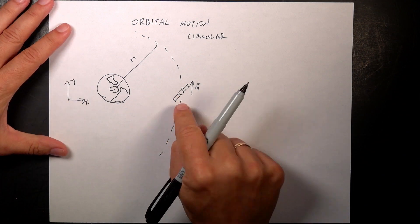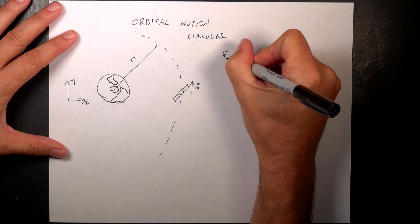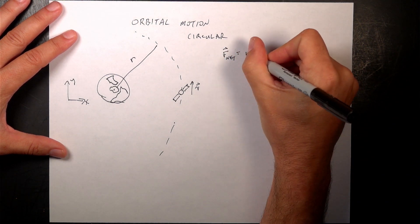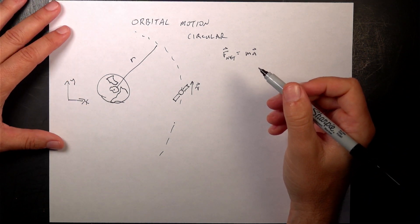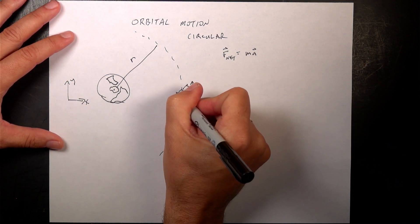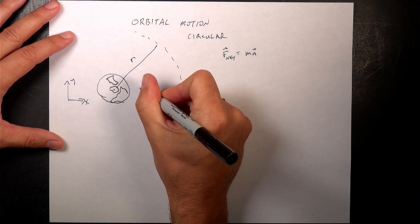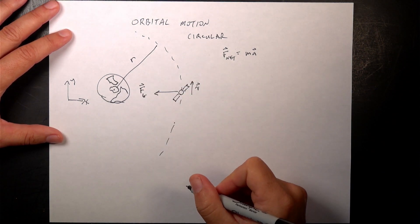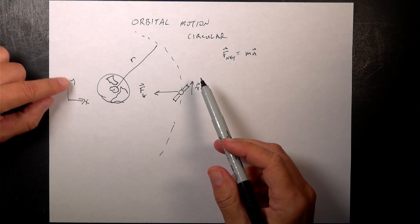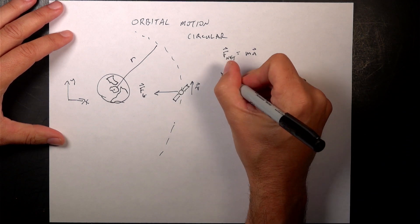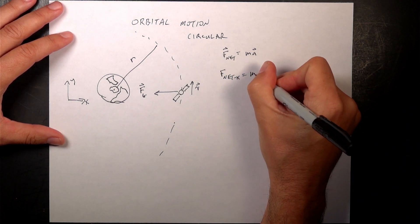So if that's the case, I can write Newton's Second Law here. I can say F net equals ma. Now, what force is acting on this satellite? Well, there's this gravitational force like this. And I'll call that Fg. And that's the only force acting on it. So if that's the case, I only have to deal with the x direction. There's nothing happening in the y direction. So I can say F net x equals ma.